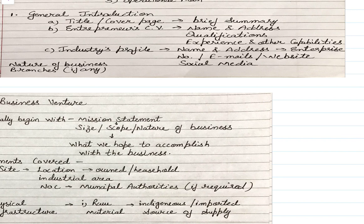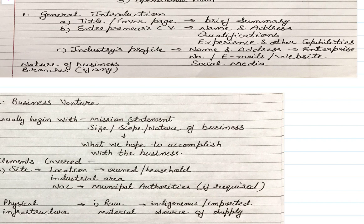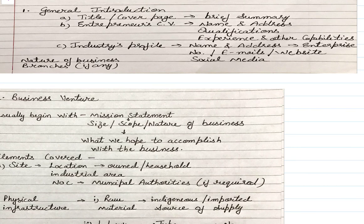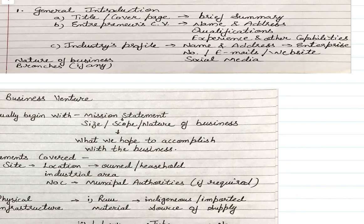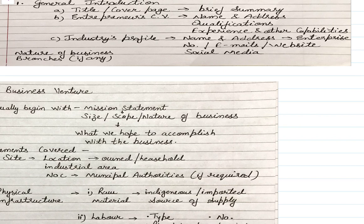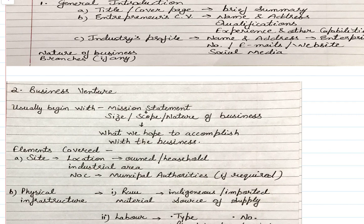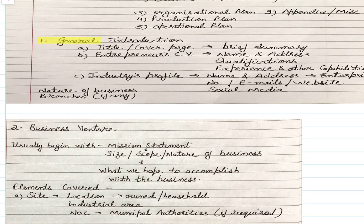If the entrepreneur has any other capabilities, those should also be written here, because other capabilities might be a selection factor for your idea. The primary use of the business plan is to attract investors, so you can write about your capabilities and qualifications. Also provide the industry profile — which industry your business idea comes from, whether it is retail, technology, or another sector — so the investor gets a basic idea of whether this business plan fits their interest and zone. Include the name, address, official number, email address, website, and social media details of your enterprise, since in the modern world all businesses have social media presence. Also mention your nature of business and branches.